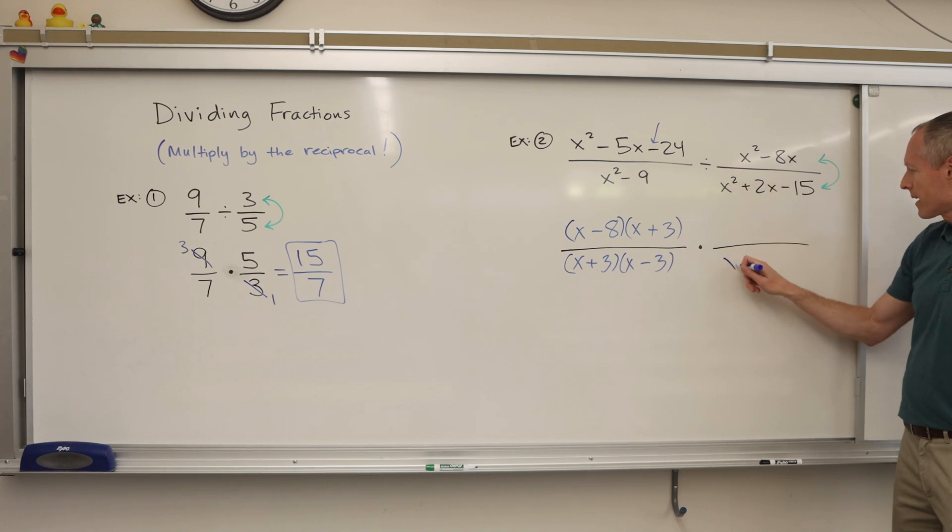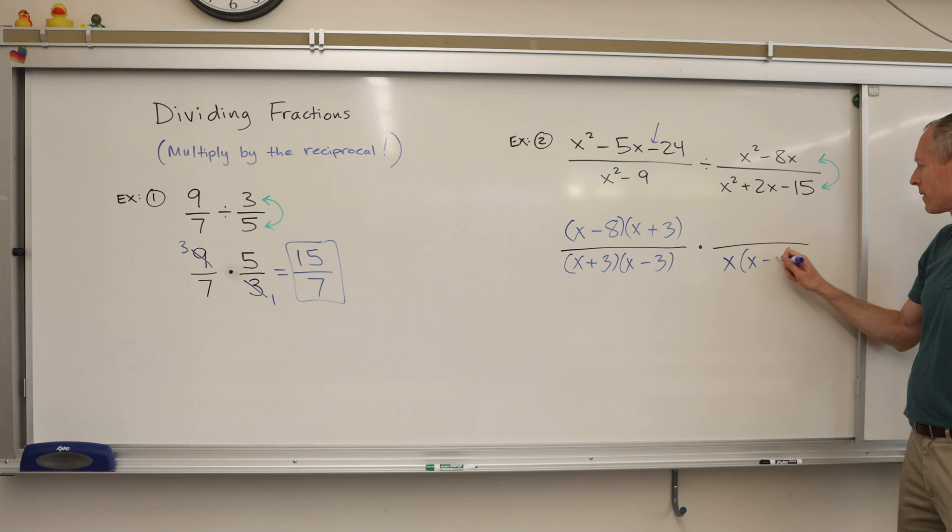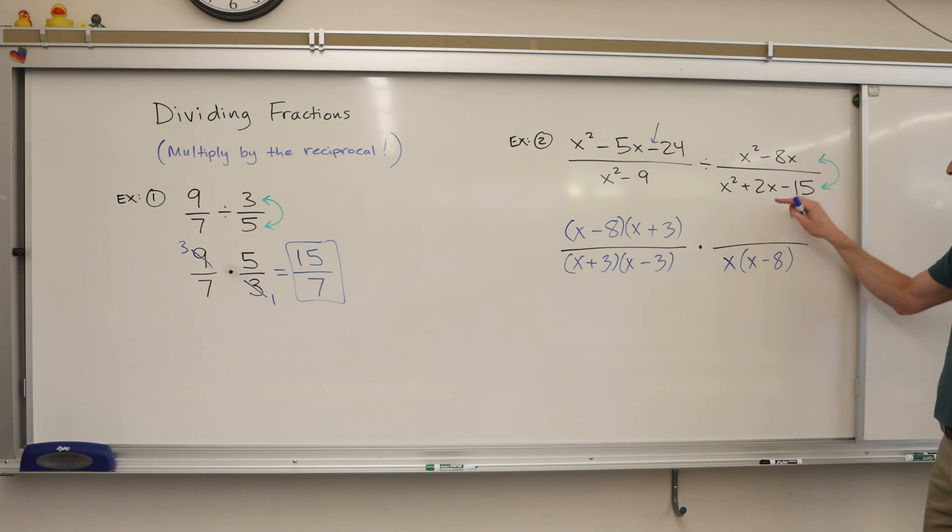So I didn't mention this yet, but when you're factoring, you always should look for a GCF, a greatest common factor first. So these do. These have an x in common. And so I pull that out and I'm only left with x minus 8. So this was on top here, but I flipped it. So now it's in the bottom.